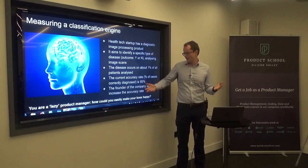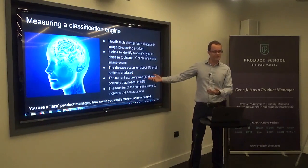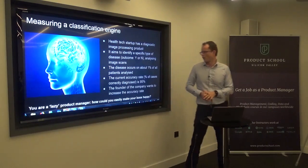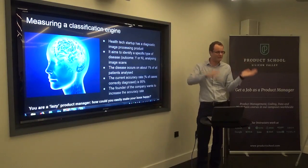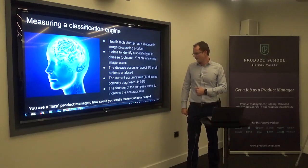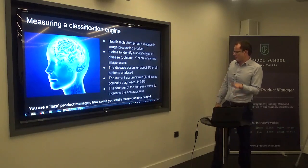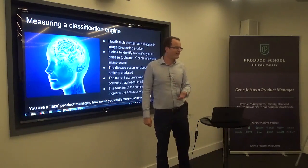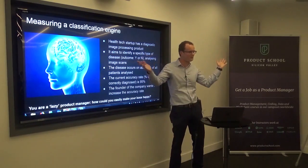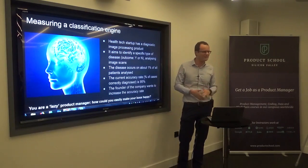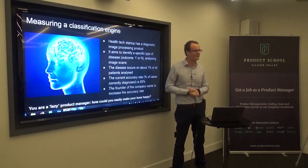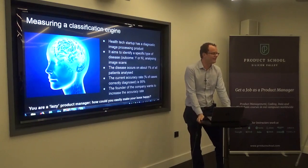Currently the CEO looks at accuracy rate — simply the percentage of cases where we gave the right answer. If it was yes, we say yes; if it was no, we say no. And it is only 95%. The founder is not happy and wants to increase this accuracy. You are the product manager and want to find an easy way — let's say you're a lazy but fair product manager. You don't want to cheat, so what could you do?